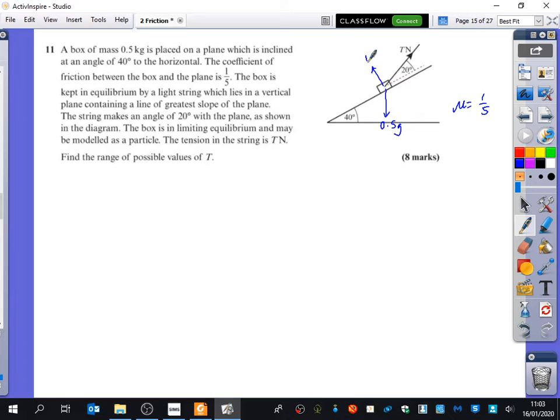Better add in my normal reaction too. The box is kept in equilibrium by a light string which lies in a vertical plane containing a line of greater slope of the plane. All that means is the string is going directly up the slope. The string makes an angle of 20 degrees with the plane as shown in the diagram. The box is in limiting equilibrium and may be modeled as a particle. The tension in the string is t newtons. Find the range of possible values of t.